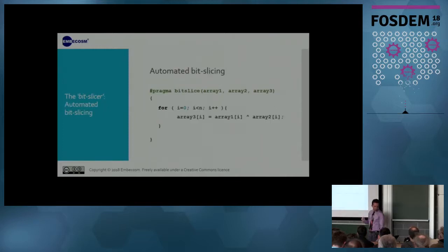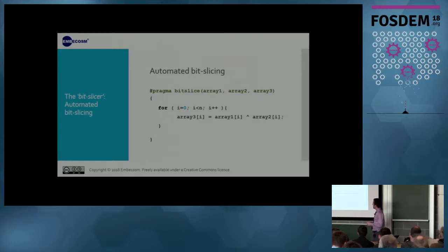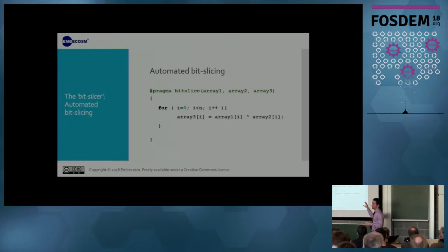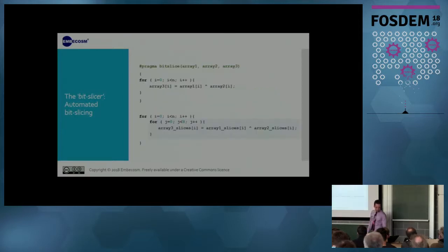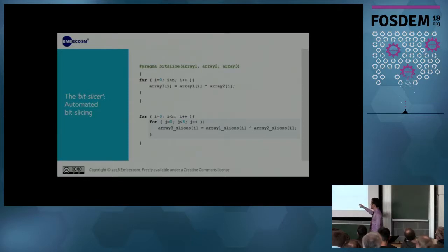That's how it should work with automated B-slicing — it's still a work in progress. I intend to introduce a pragma that takes as arguments the data structures that need to be sliced and that encloses the part of the code to be sliced. The compiler would then create a second version of the code automatically, hiding the complexity from you.